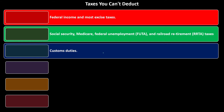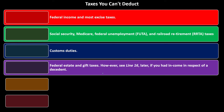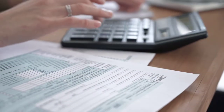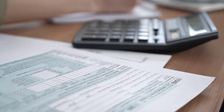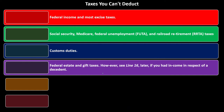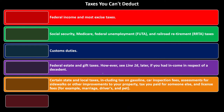Now we're talking about Schedule A deductions for taxes. Custom duties and federal estate and gift taxes are different types of taxes than income tax, but they're also not deductible. However, see line 16 later if you had income in respect of a decedent. Certain state and local taxes are also not deductible, including tax on gasoline, car inspection fees, assessments for sidewalks or other improvements to your property, tax you paid for someone else, and license fees.